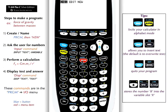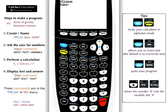To start, press the program button and go to New. Then ask for a title — I'm going to call it FGrav for force of gravity, but you can't use spaces in the title of programs.